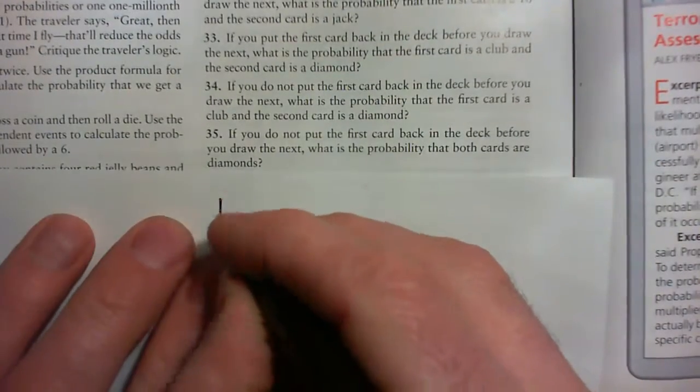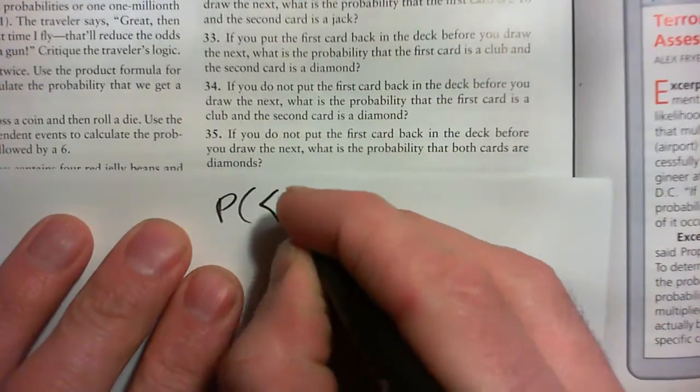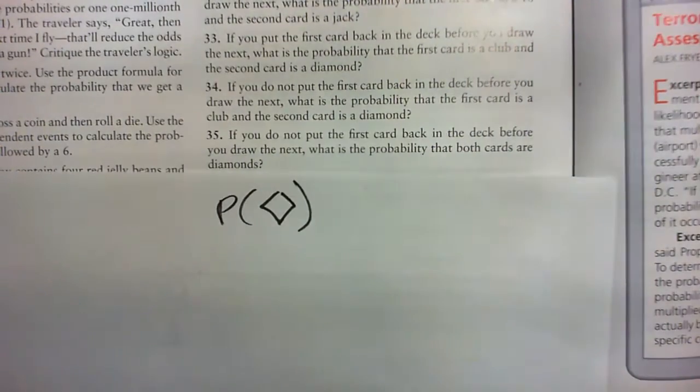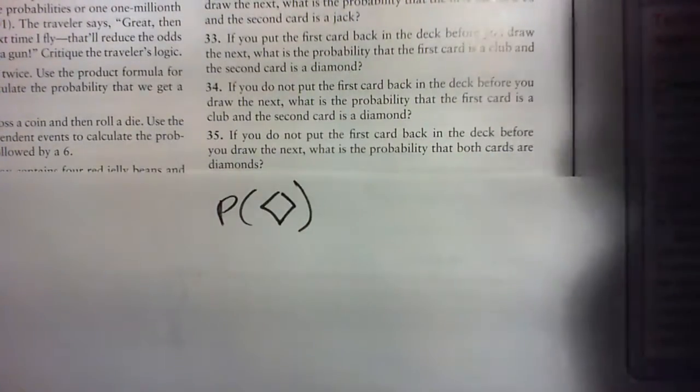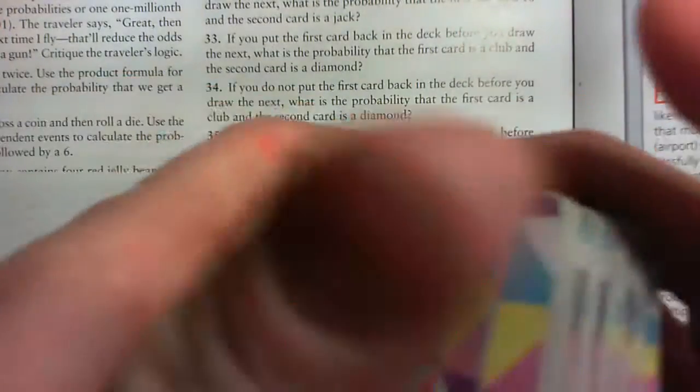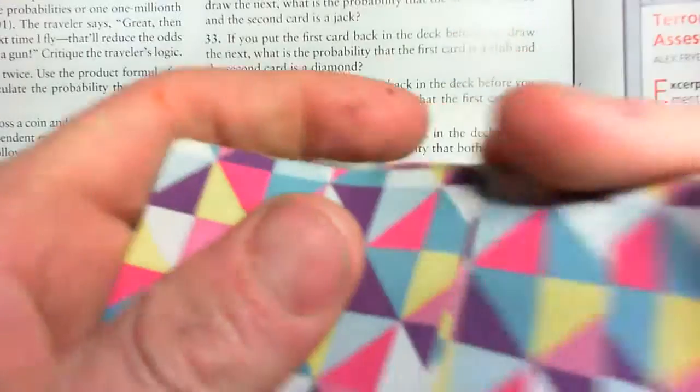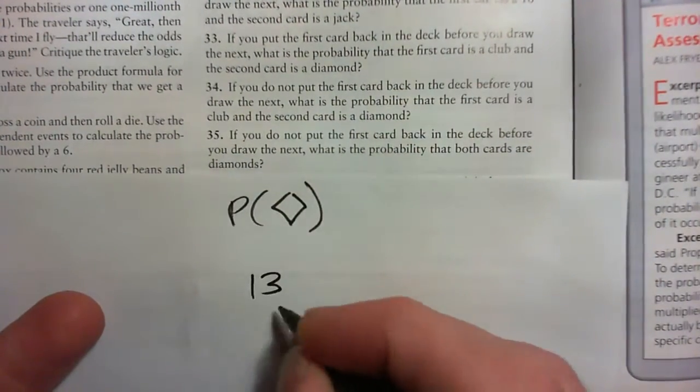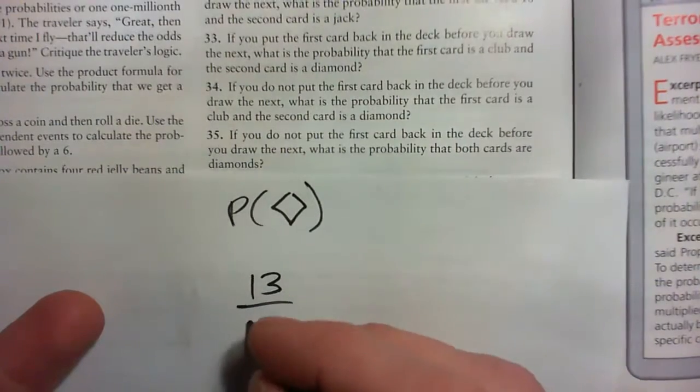Okay, so the probability that the first card is a diamond is what? Okay, so we've got a deck. It's been shuffled well. How many cards in the deck? Well, we're going to assume 52. Okay, there are 13 diamonds, so the probability of the first card being a diamond is 13 out of 52.